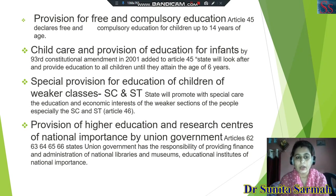Articles 62, 63, 64, 65, and 66 deal with provision of higher education and research centers of national importance by the union government. The union government has the responsibility of providing finance and administration for national libraries and union education institutions of national importance.